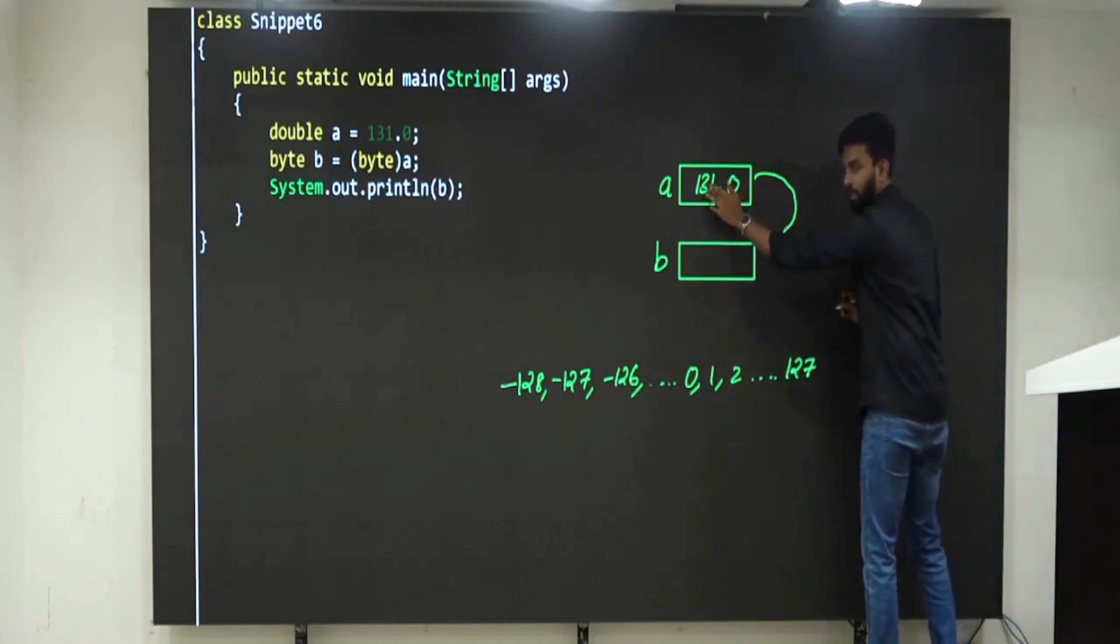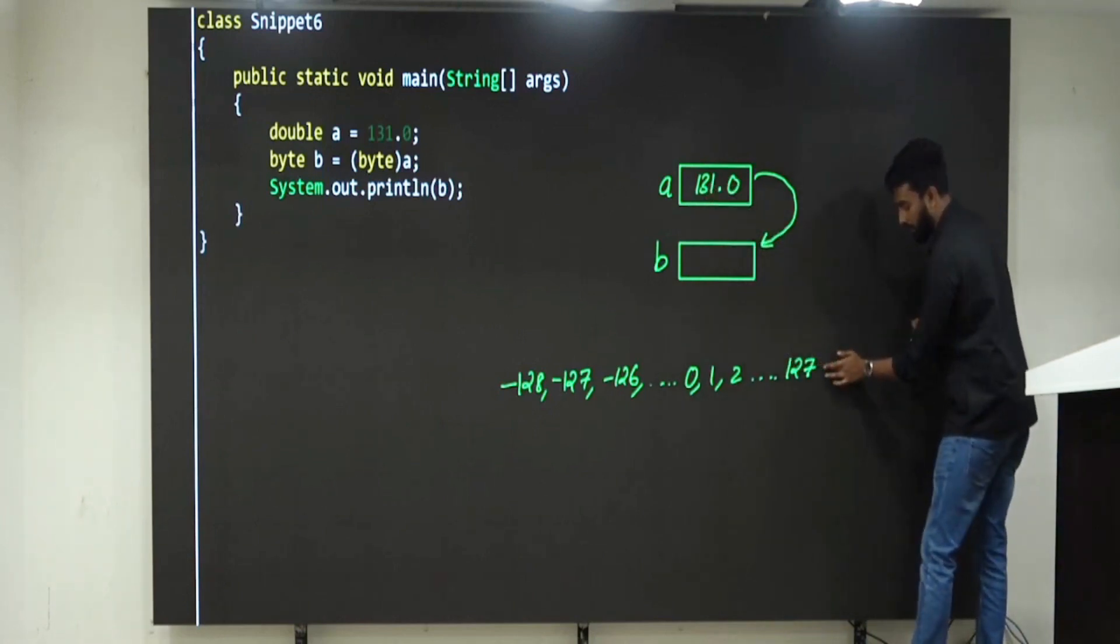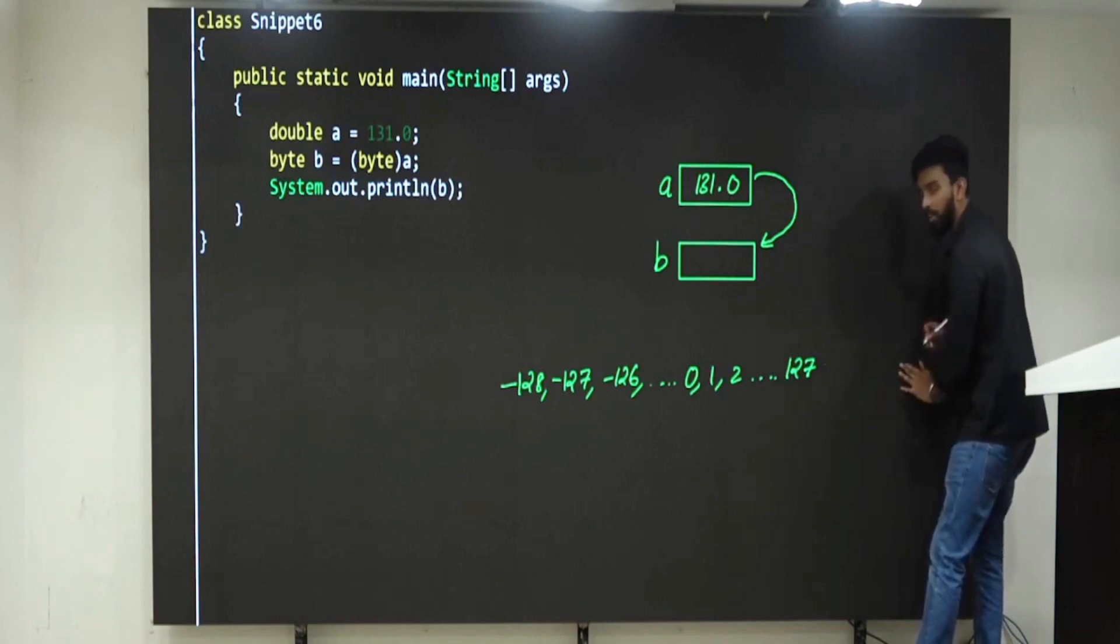Now, you are trying to store 131, which means 128, 129, 130, 131. How many values ahead is it?